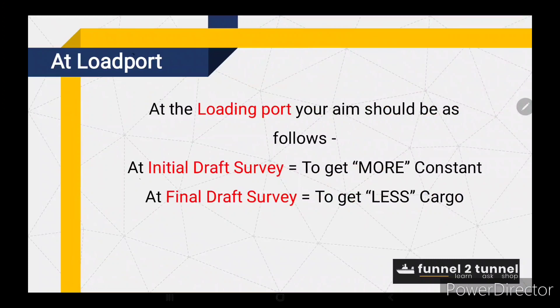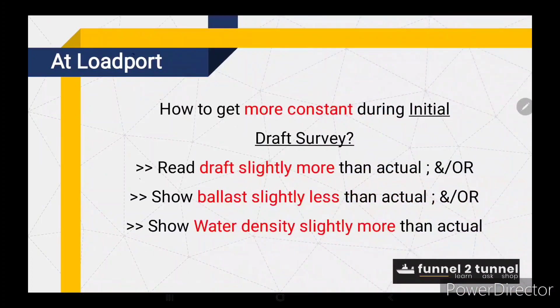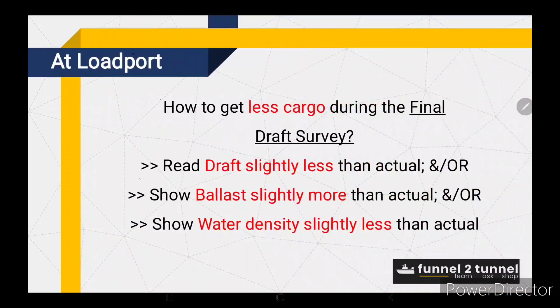At the loading port, your aim should be as follows. At the initial draft survey, your aim should be to get more constant. At the final draft survey, your aim should be to get less cargo. To get more constant during the initial draft survey, there are three methods: read draft slightly more than actual, and/or show ballast slightly less than actual, and/or show water density slightly more than actual. To get less cargo during the final draft survey, similarly use three approaches: read draft slightly less than actual, and/or show ballast slightly more than actual, and/or show water density slightly less than actual.